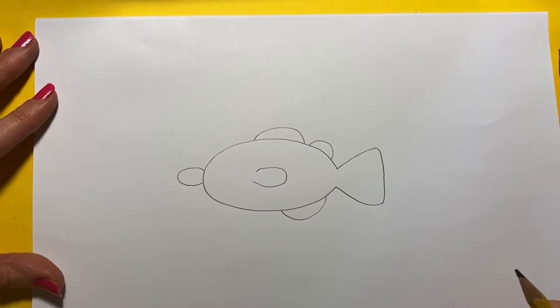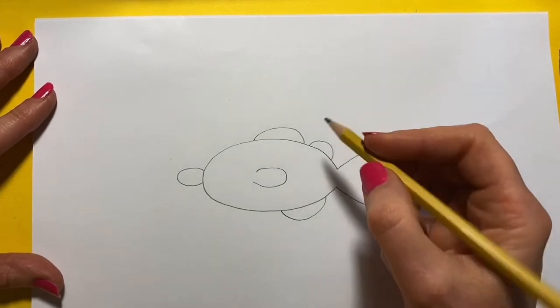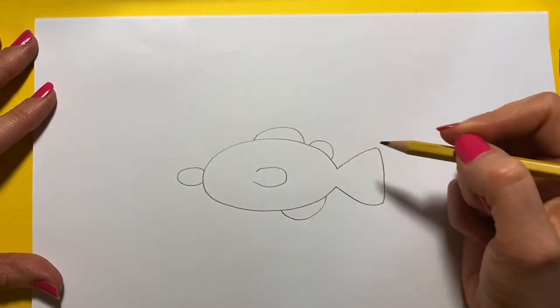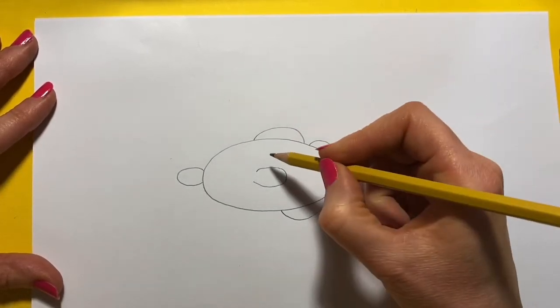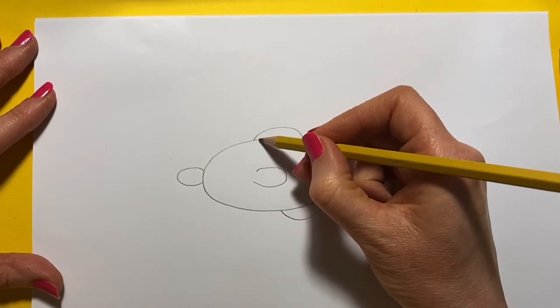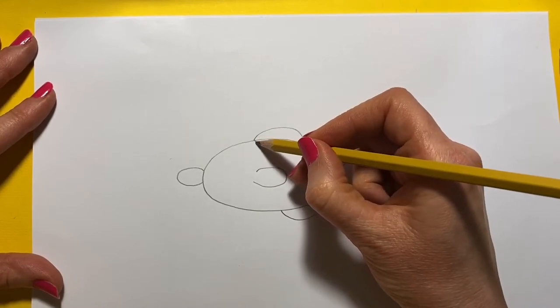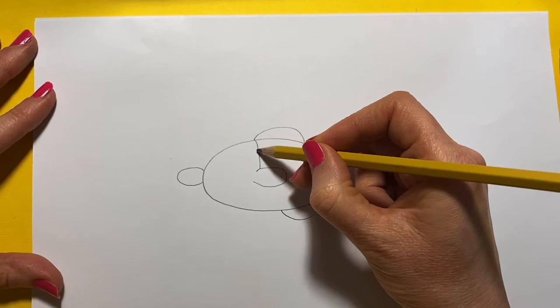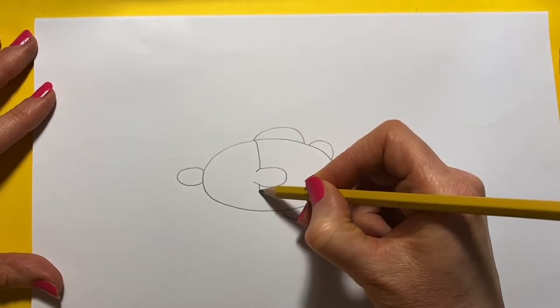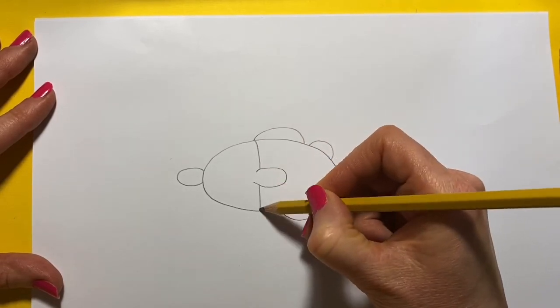It looks a bit strange at the moment, doesn't quite look like a fish, does it? But it will, I promise you. So the next thing we're going to do is the stripes. Our first stripe comes sort of around here, so we're going to do a line to the fin and a line the other side of the fin.